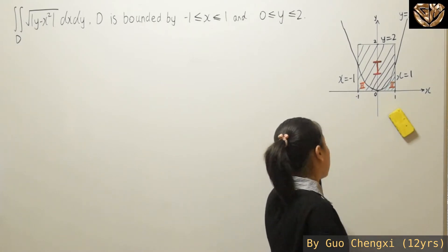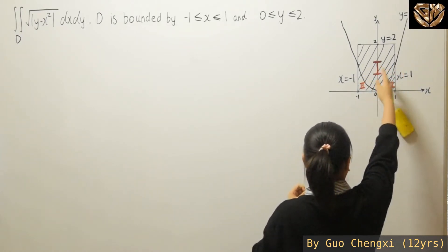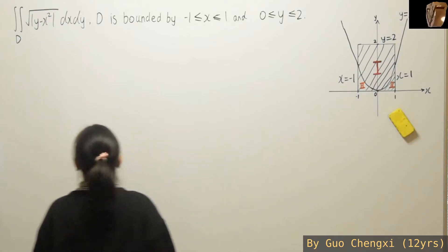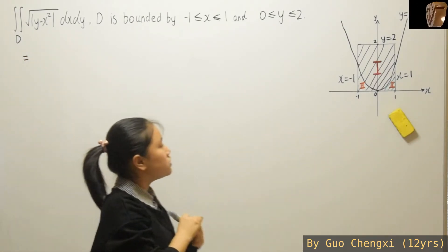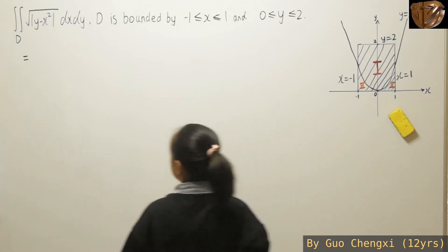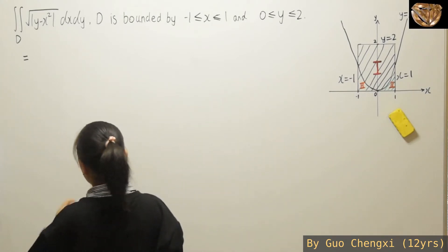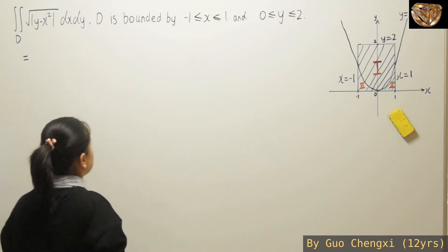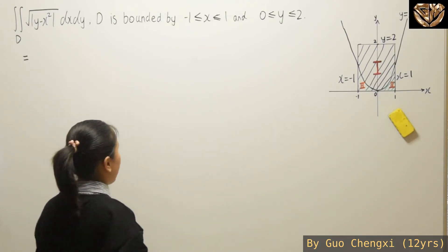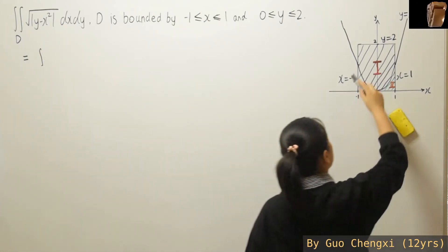So this is the graph — the shaded area over here represents the bounded area. Now, why is there a y equals x squared? For integration, you cannot integrate a modulus directly. Since you cannot integrate a modulus, you need to separate it into parts that are positive no matter what and negative no matter what. If it's negative, you have to add a minus in front. That's where we need y equals x squared.